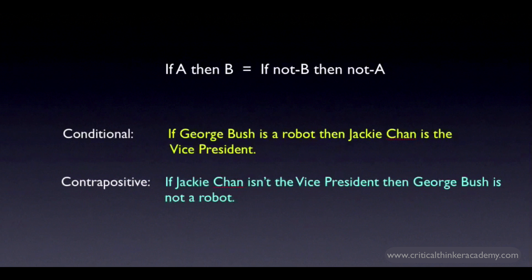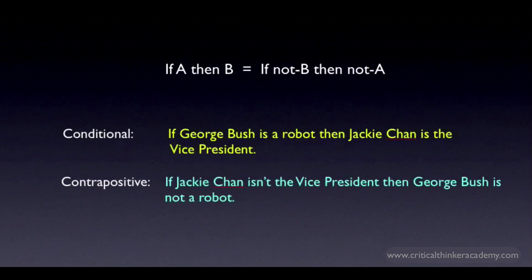The rule applies to all conditionals, even false or nonsensical ones like this one: if George Bush is a robot, then Jackie Chan is vice president. This is absurd, of course, but if this conditional was true — if George Bush's being a robot actually entailed that Jackie Chan was the vice president — then the contrapositive would also be true: if Jackie Chan is not vice president, then George Bush can't be a robot.